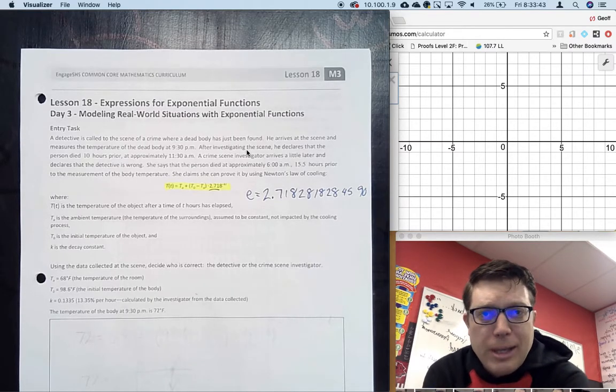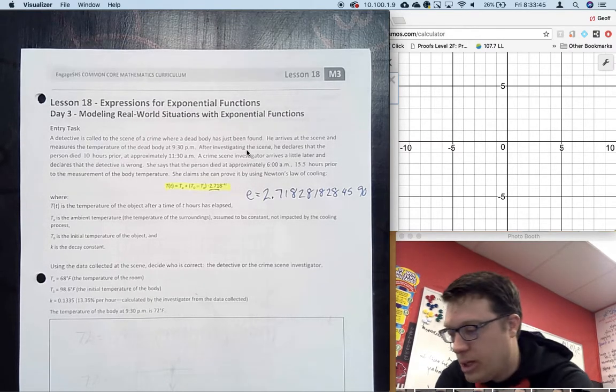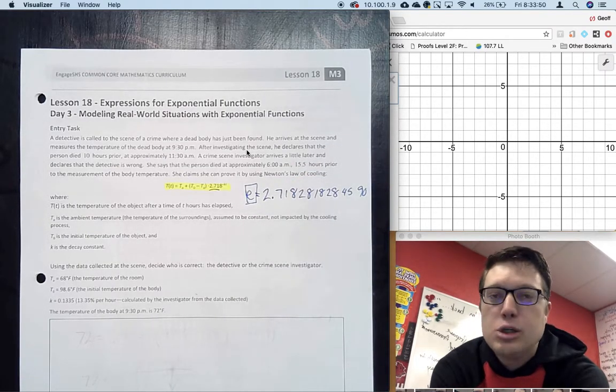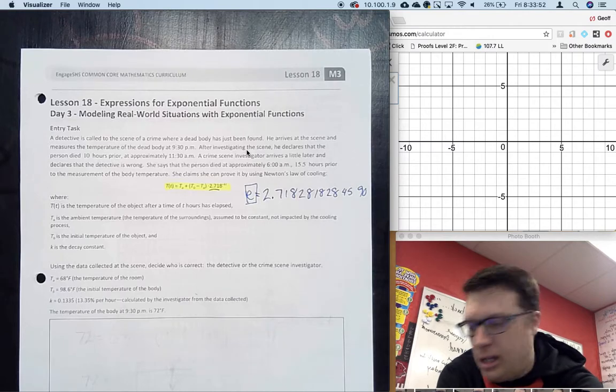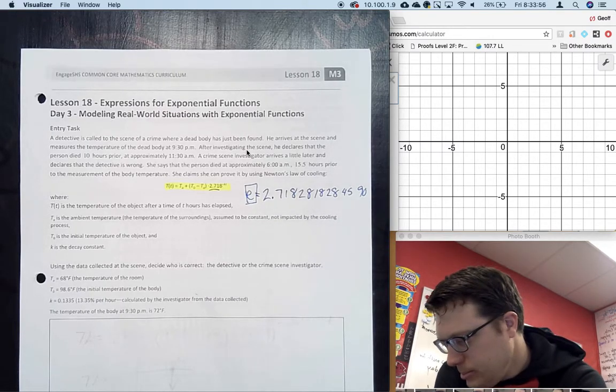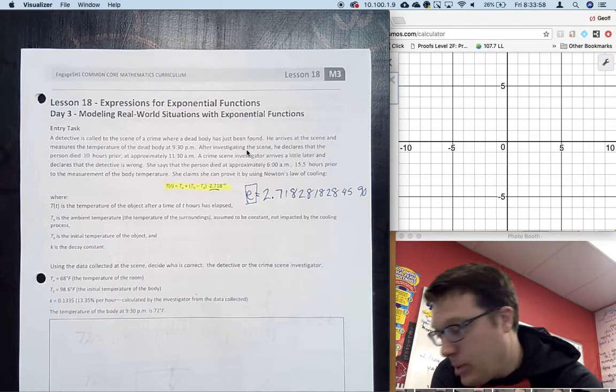If you notice, typing E into Desmos or your calculator will turn E into the constant 2.71828459... and so on. Okay, knowing that, now we're going to take a look at the information.